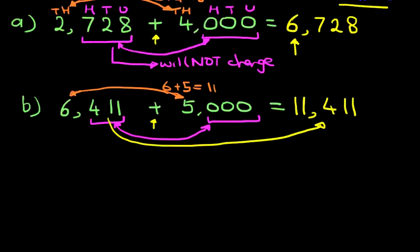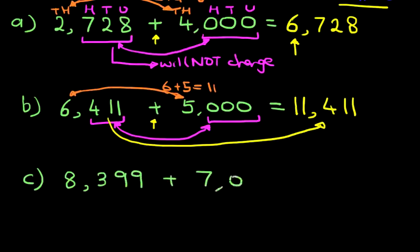Okay, let's scroll down and we'll work through one more. Adding thousands is very simple. We've got 8,399 plus 7,000. Now, again, the same principle applies. 399 when added to three zeros is not going to change.